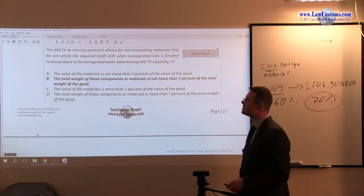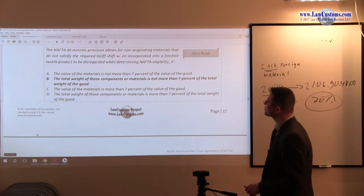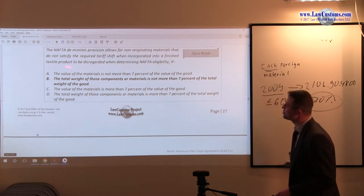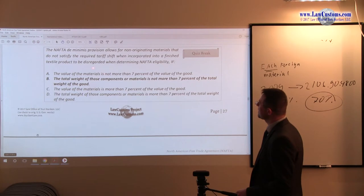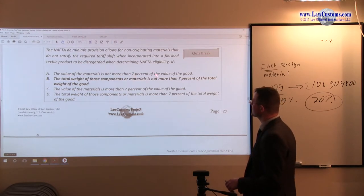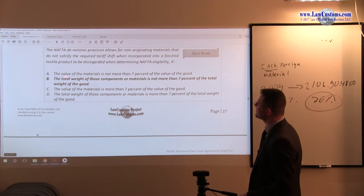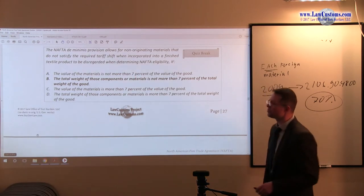Here they are more straight to the point. NAFTA de minimis provision allows for non-originating materials that do not satisfy the tariff shift to be disregarded when determining NAFTA eligibility if the value of those materials is not more than 7% of the value of the good.